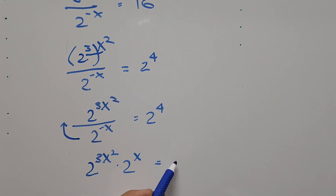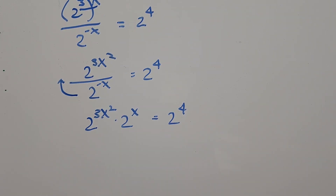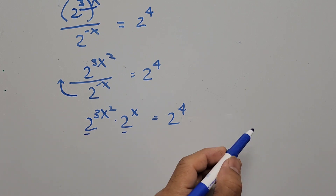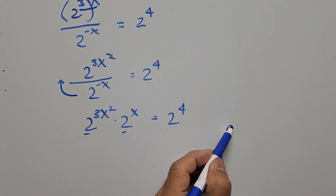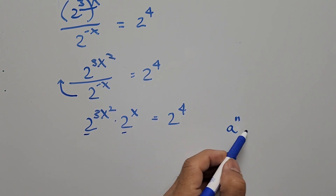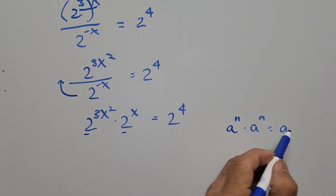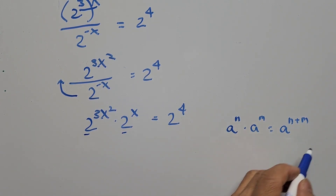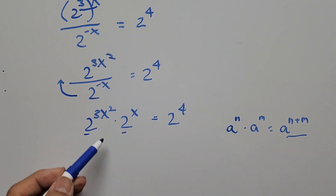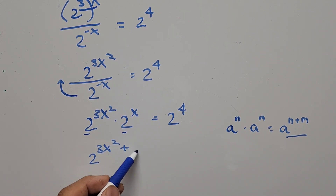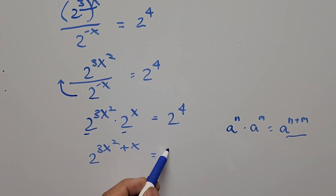So the equation now becomes 2 to the power of 3x squared times 2 to the power of positive x equals 2 to the power of 4. On the left-hand side we have the same base, so we combine the exponents using the formula: a to the n times a to the m equals a to the power of n plus m. So we end up adding the exponents.